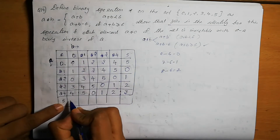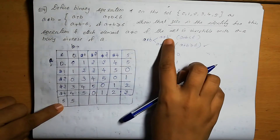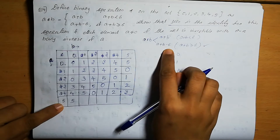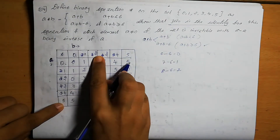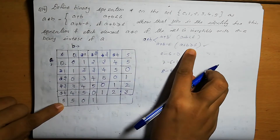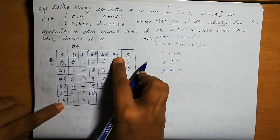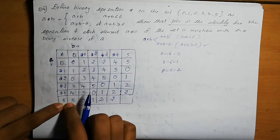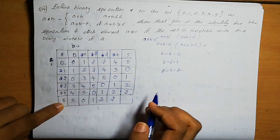Row 5: 5+0=5. For 5+1=6, we write 6 minus 6 equals 0. For 5+2=7, we write 7 minus 6 equals 1. For 5+3=8, we write 8 minus 6 equals 2. For 5+4=9, we write 9 minus 6 equals 3. For 5+5=10, we write 10 minus 6 equals 4.